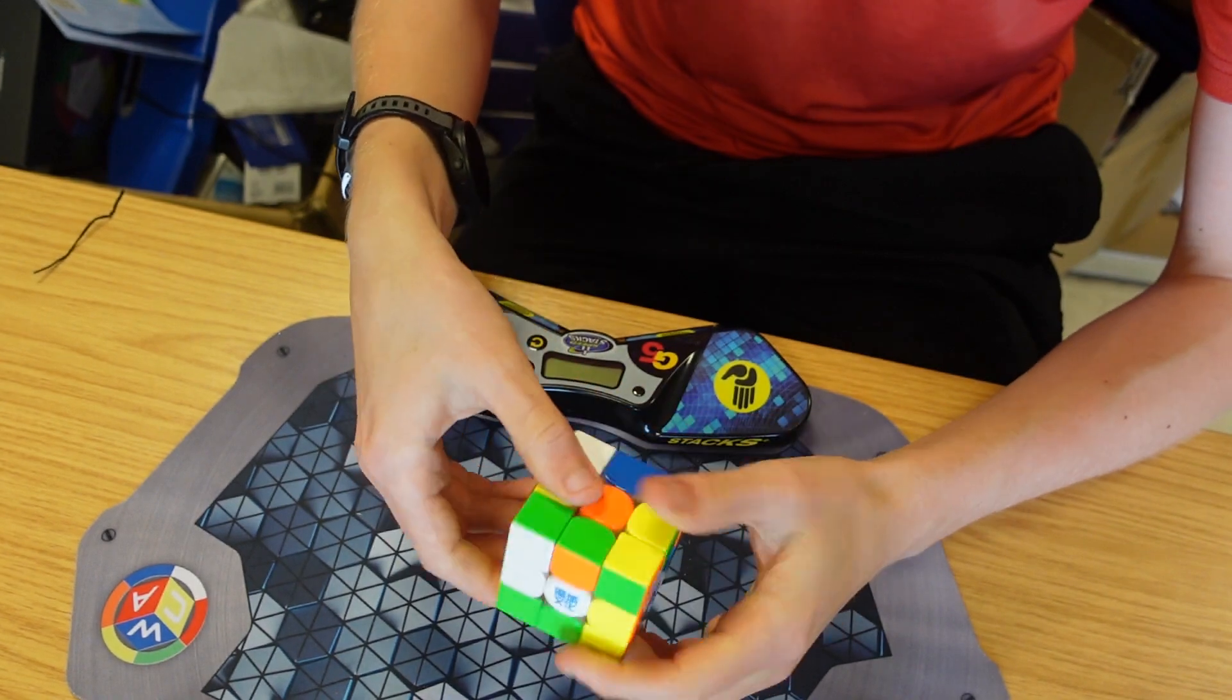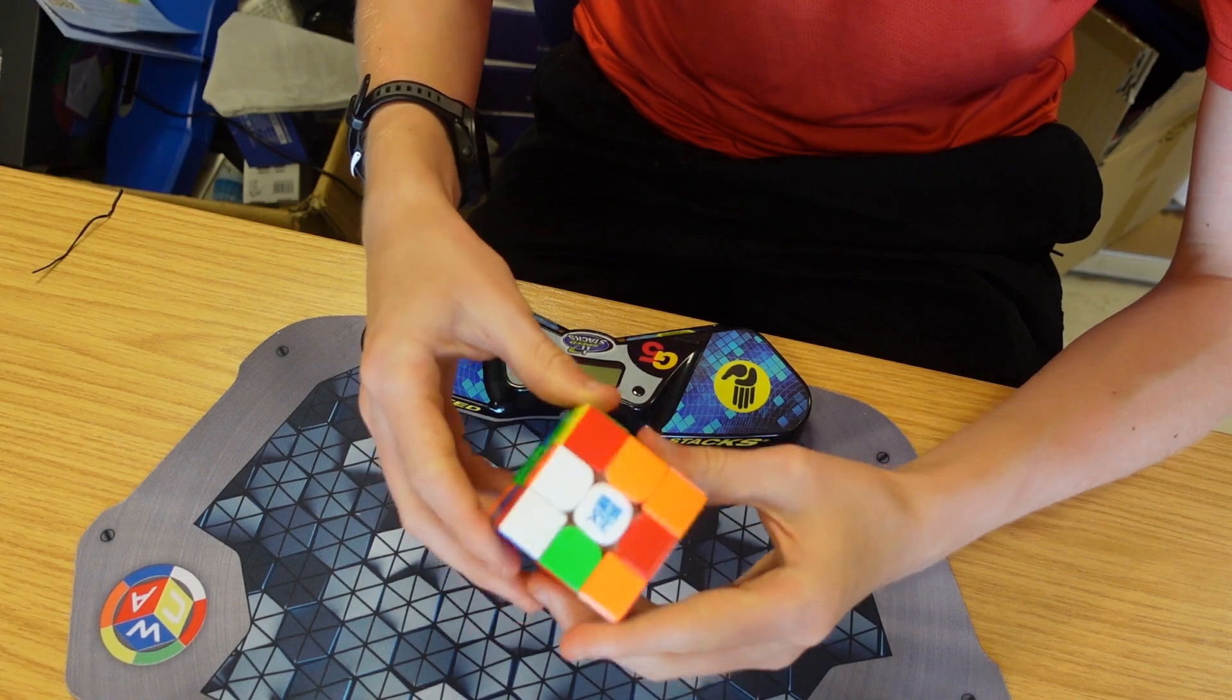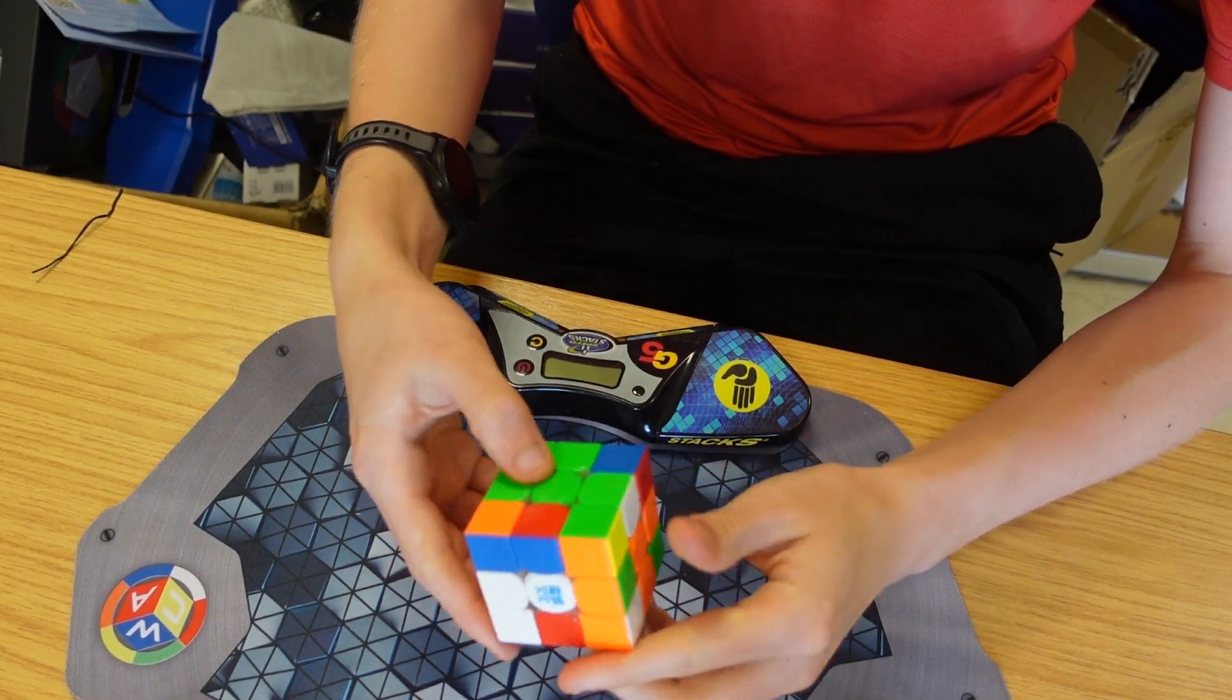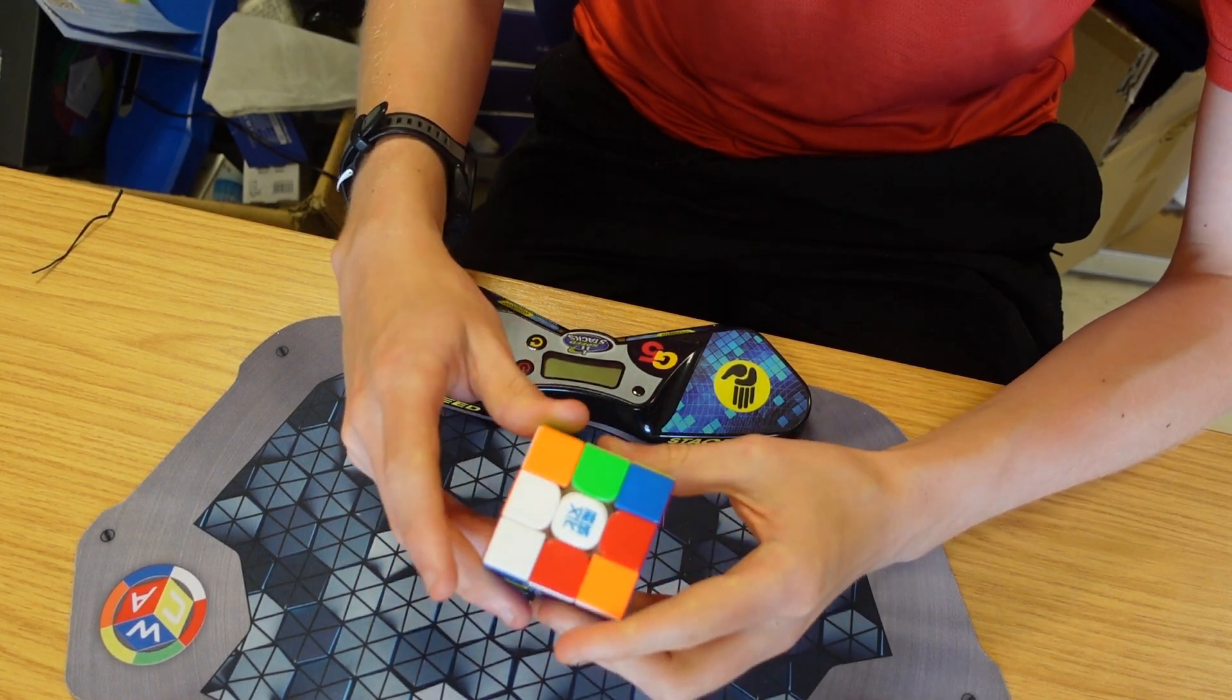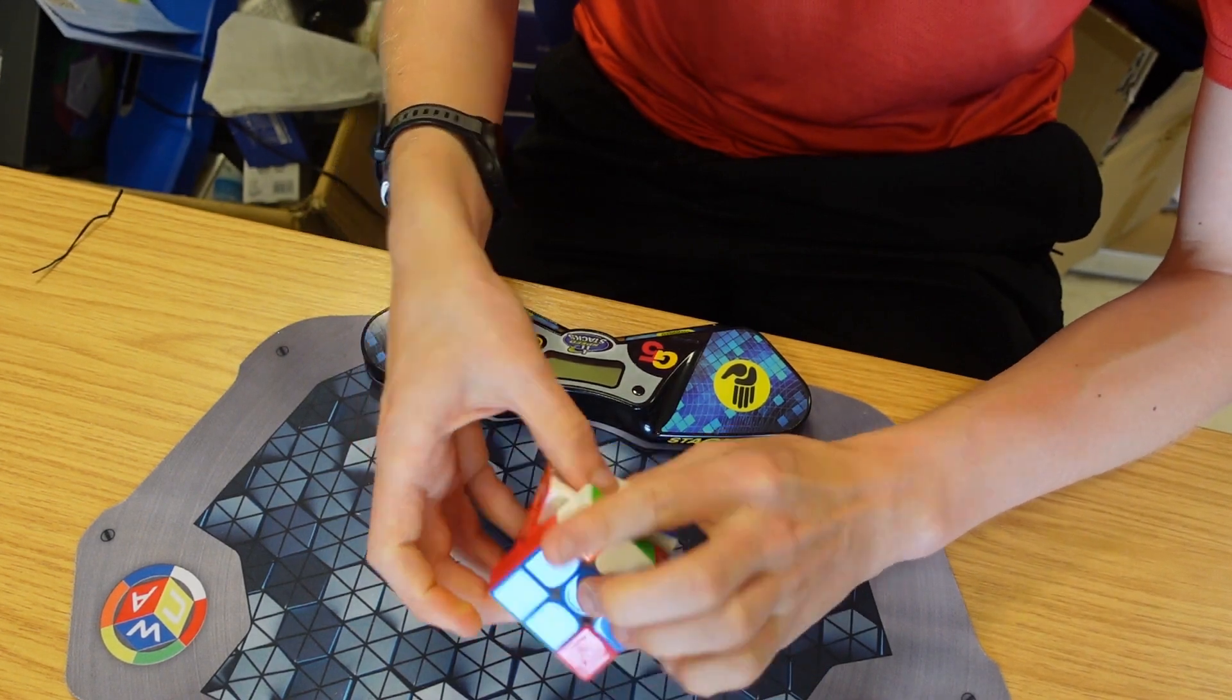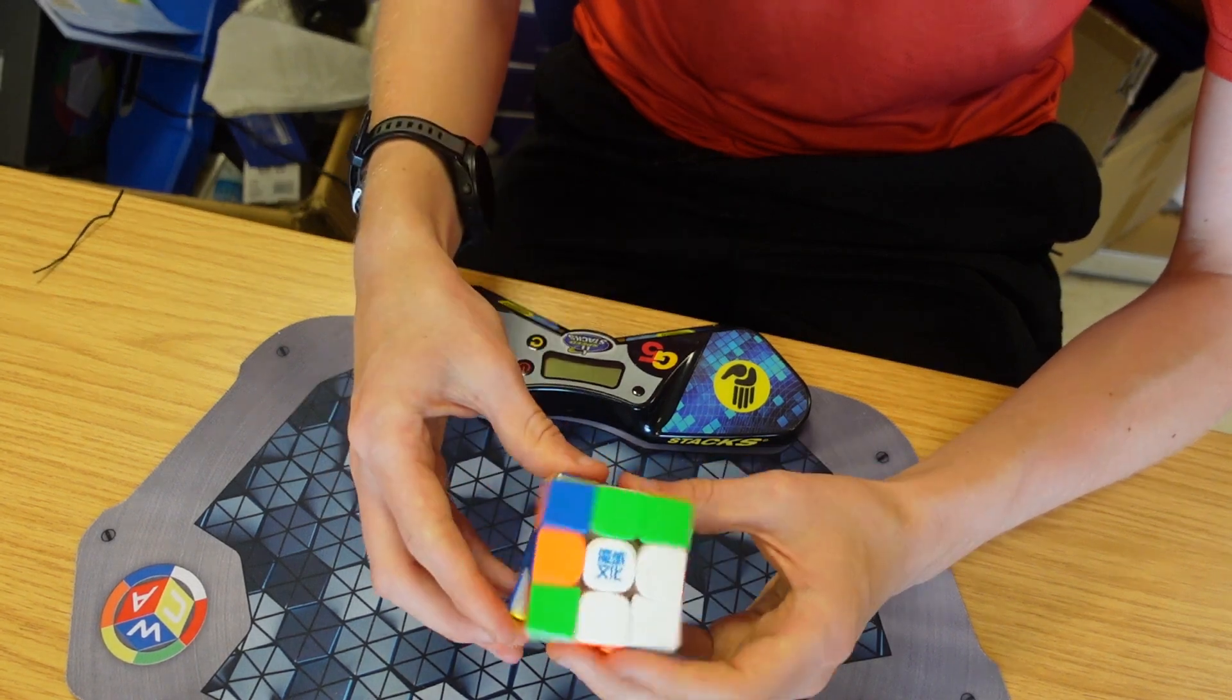Then we're going to insert this edge which has been preserved to an extent. Then we're going to insert this edge and corner, pair that up and insert it into the back. Then we can rotate to solve this.